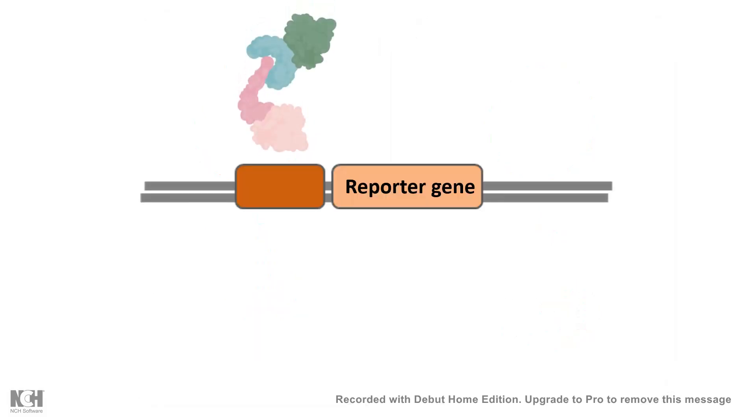Now the gal4 DNA binding domain and the activator domain both would interact with each other only if bait and fish interact with each other, and the readout by which we would understand that the transcription is happening is by putting a reporter gene. By understanding whether the reporter gene is expressing we would understand whether the bait and the fish are interacting and in turn whether the gal4 AD and the gal4 DBD is interacting with each other.